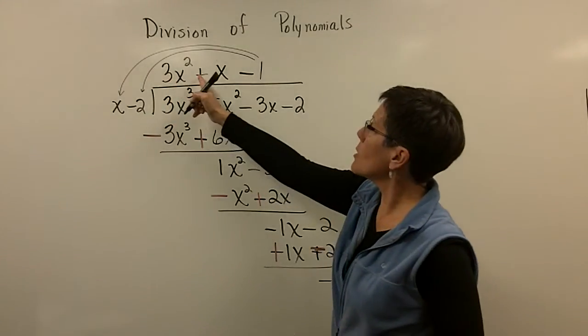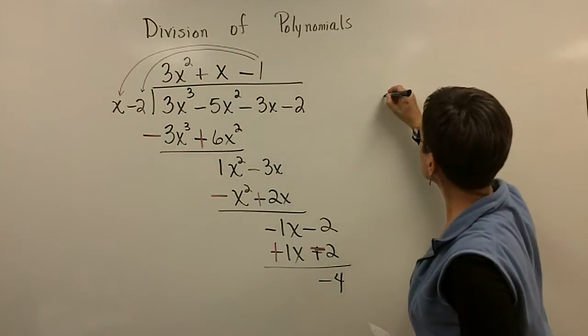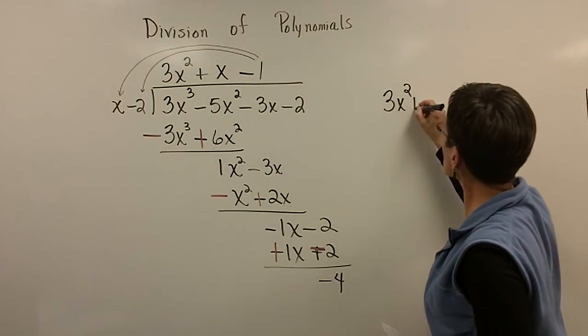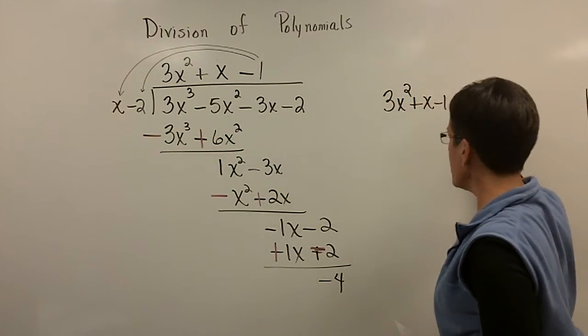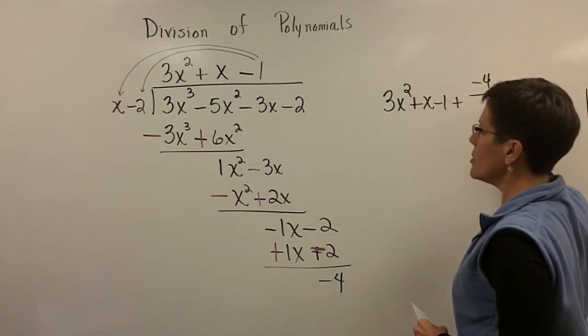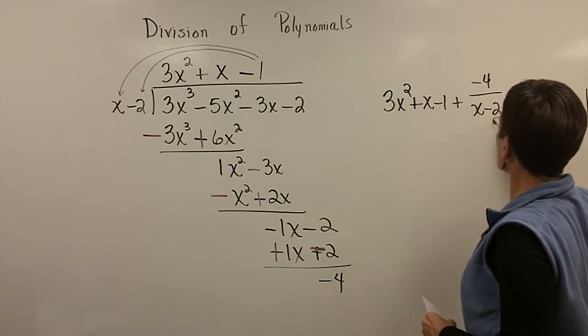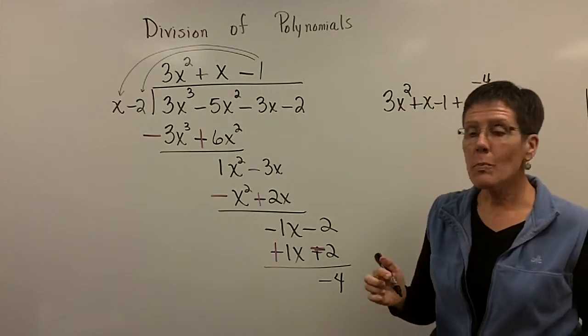So finally, my answer is 3x squared plus x minus 1. And then I have a divisor of a negative 4. I'm sorry, a remainder of a negative 4 over that divisor of x minus 2. There's my final answer.